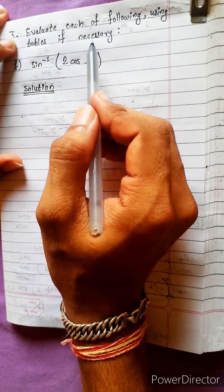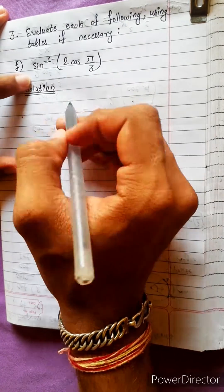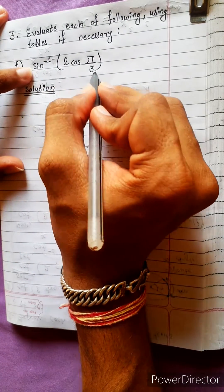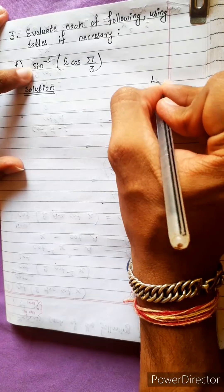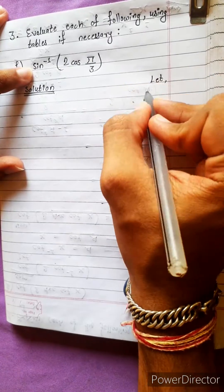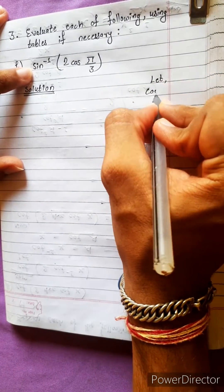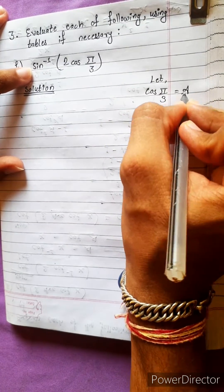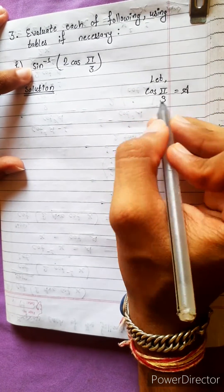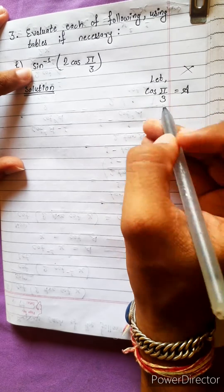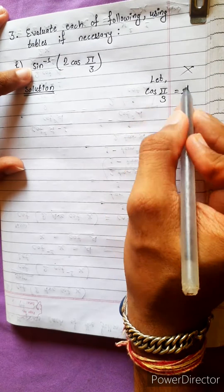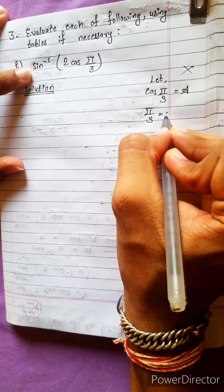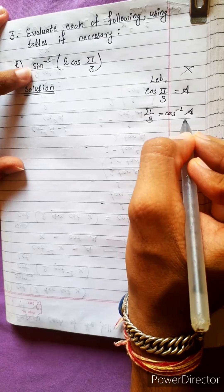I want to evaluate each of the following using tables if necessary. Let cos(π/3) equal A. This way we take a step — cos(π/3) equals A means we can say cos⁻¹(A) equals π/3.